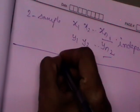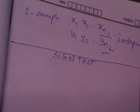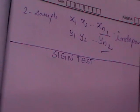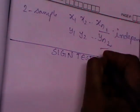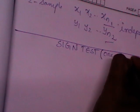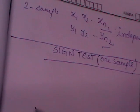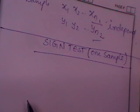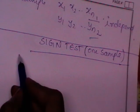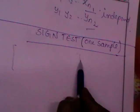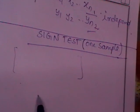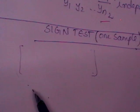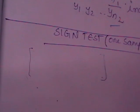Now we enter the first test called the sign test. The sign test applies to both one-sample and two-sample cases, as does the run test. For the sign test for one sample, you should specify the sample and its PDF, write the null hypothesis, write the test statistic, and make a decision.